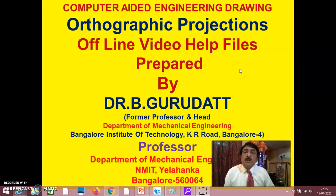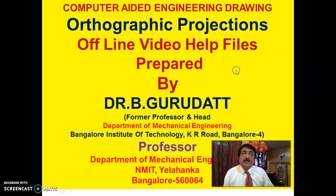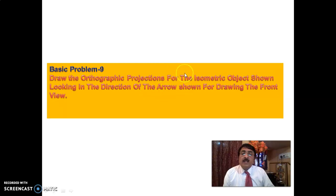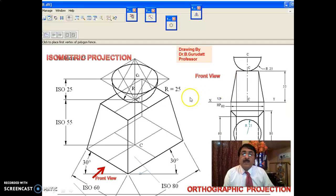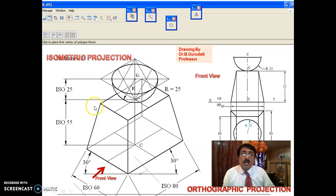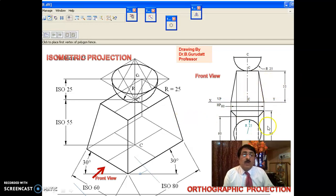Hello friends, welcome to session 3 on orthographic projections. There is an object here. The isometric projection has been given, and you just have to analyze it. After analysis, your objective is to draw the corresponding orthographic projections — the front view, top view, and sometimes the side view also.